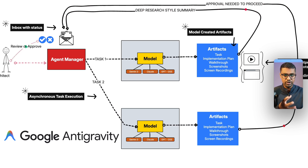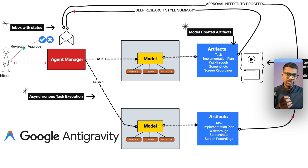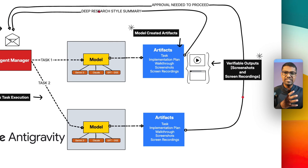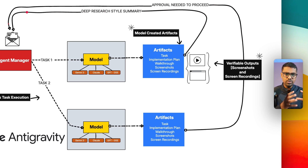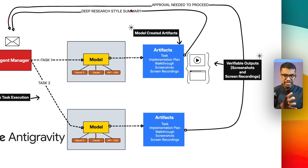I have the option of choosing the model, which is really important because I can choose different models for different tasks. Let's say I go with the latest model, Gemini 3. Once I choose Gemini 3, the model creates an artifact — a task list and an implementation plan walkthrough depending on the goal. The two key artifacts that are personally my favorite are the screenshots and the screen recording.